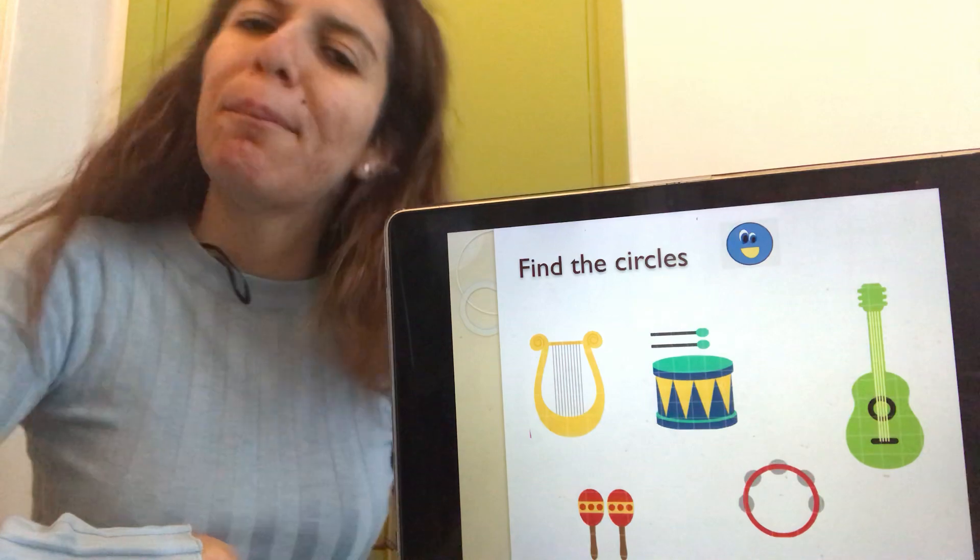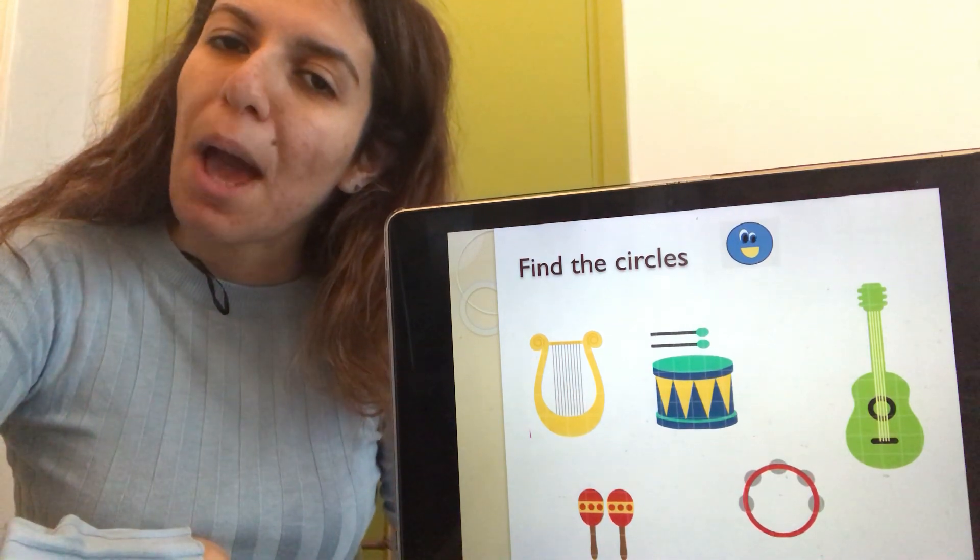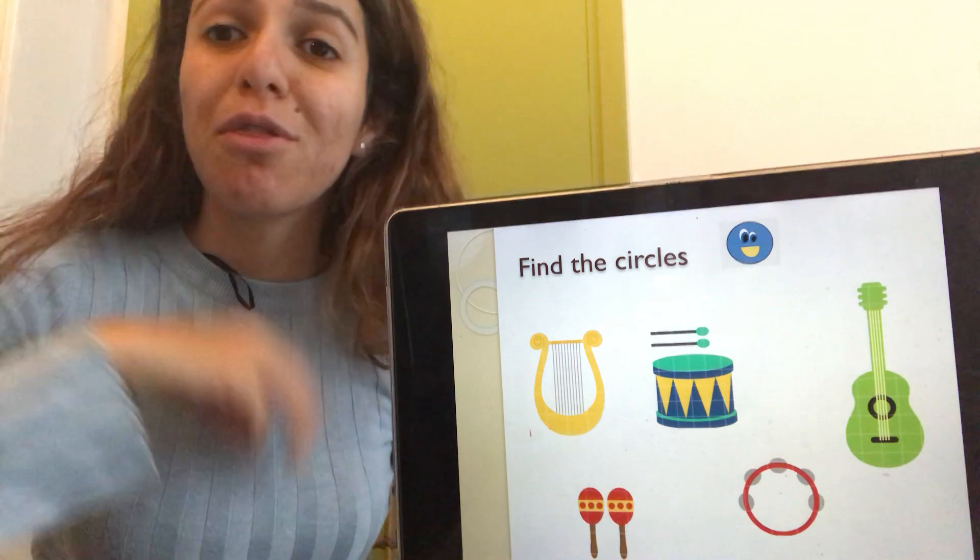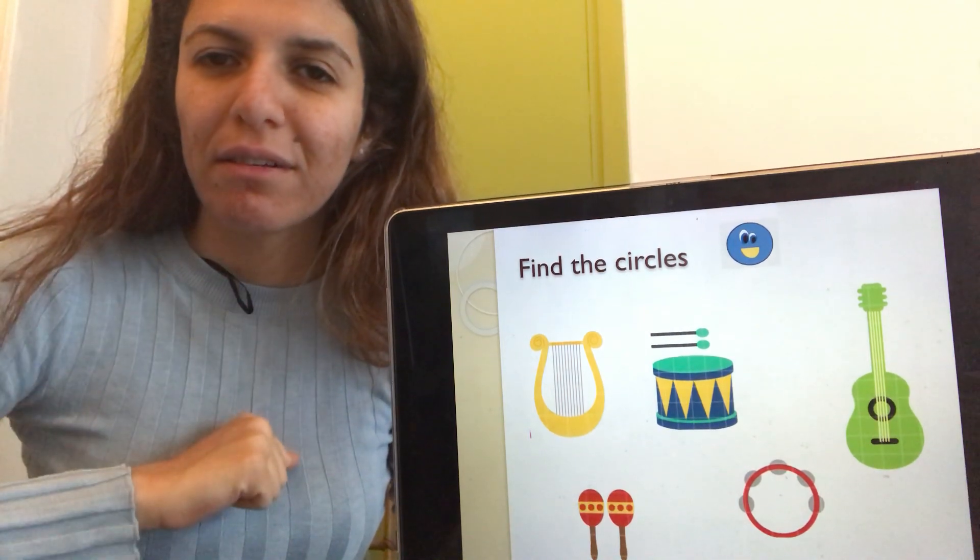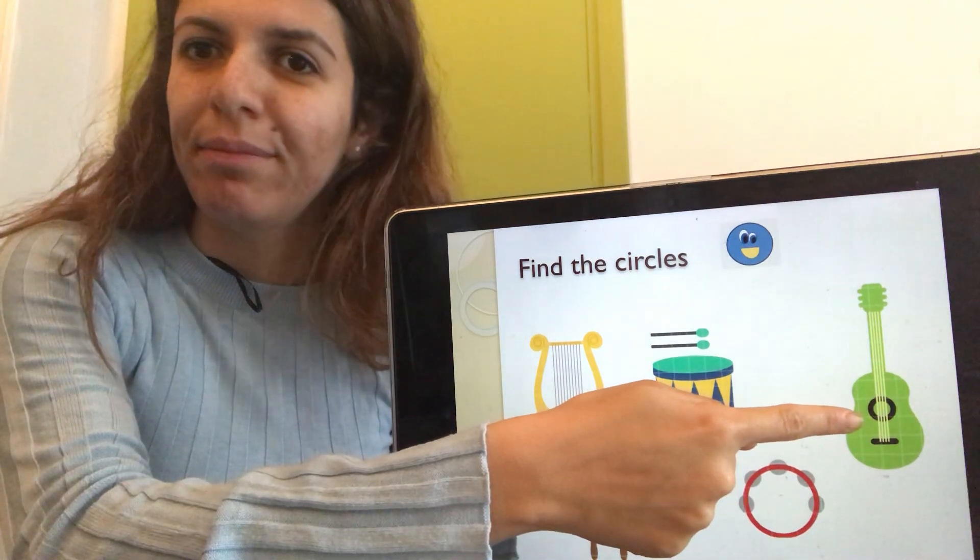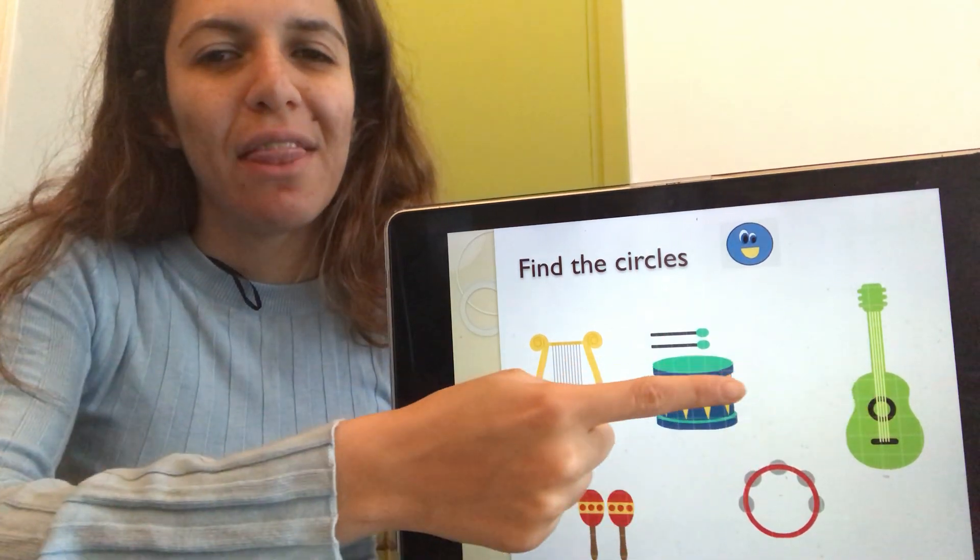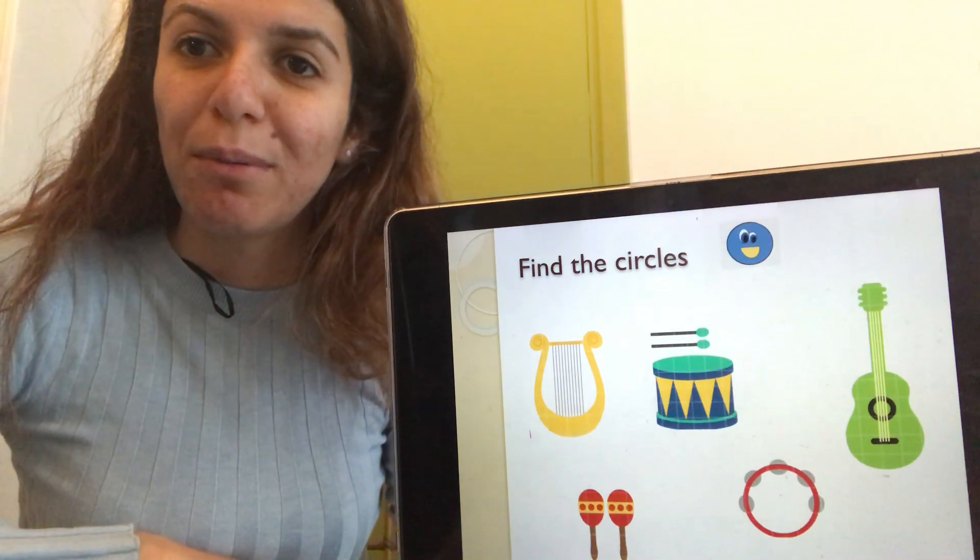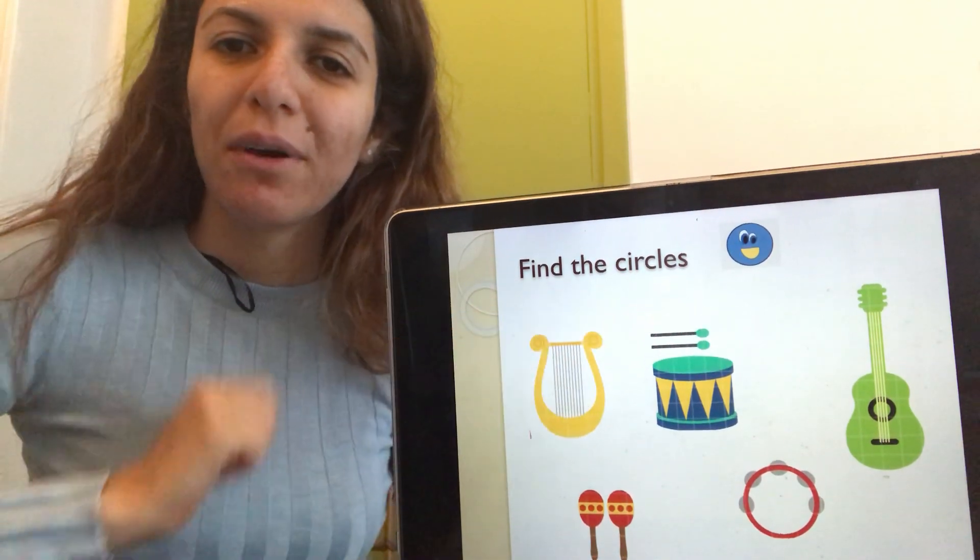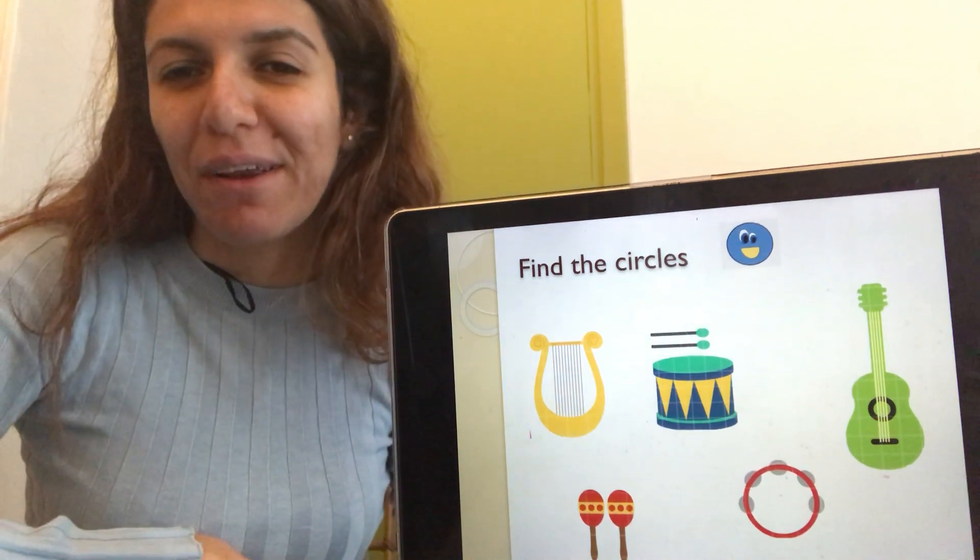What about a blue circle? Three blue circles? Is that a blue circle? No. There's a blue circle. Can you find the other two blue circles? One, two. Well done everybody.